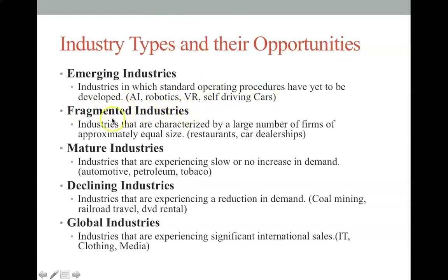Fragmented industries are characterized by a large number of companies that are pretty much the same size. Restaurants and car dealerships are examples — McDonald's, Burger King, Subway, and others are all roughly equal in size. Car dealerships are similar — Ford, Toyota, Kia, Mazda — no one significantly dominating the rest.